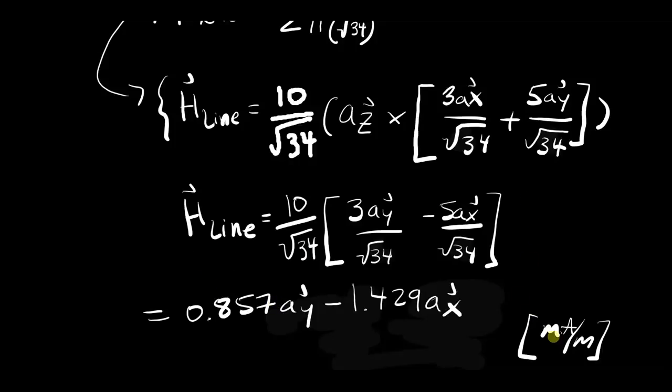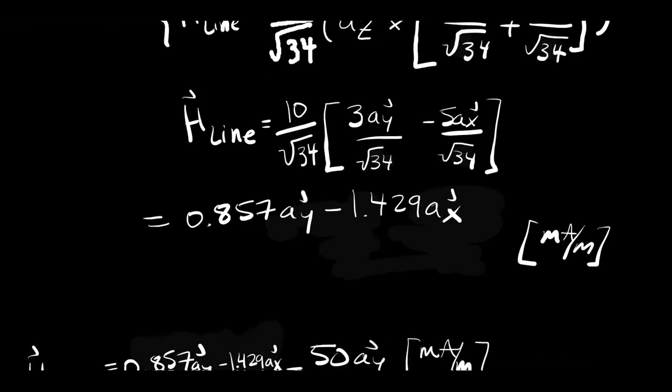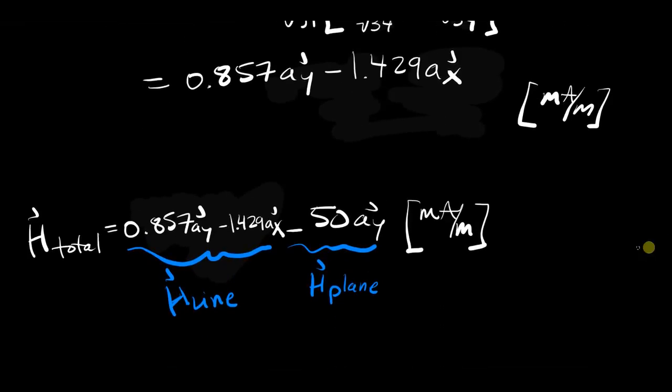And we're not quite done yet. And remember, it's in milliamps per meter. We're not quite done yet. We just need to add the magnetic field due to the line, which is this part, these first two terms, and the magnetic field due to the plane. And don't forget your units, milliamps per meter in the case of this question. And that's the total magnetic field due to these two currents.